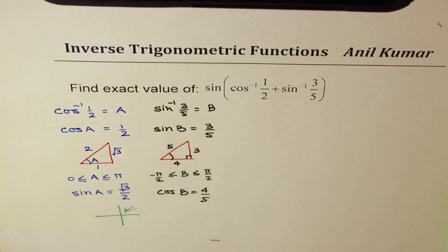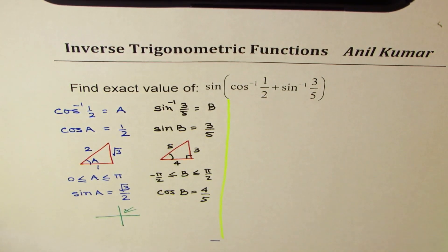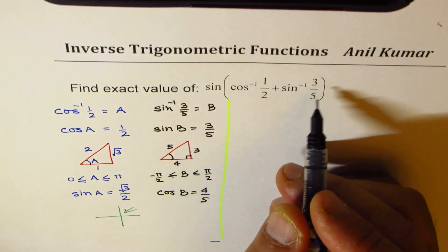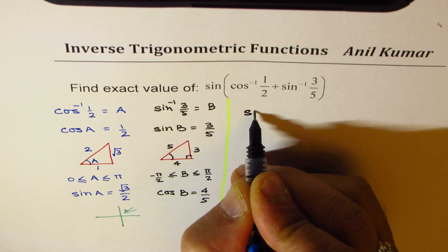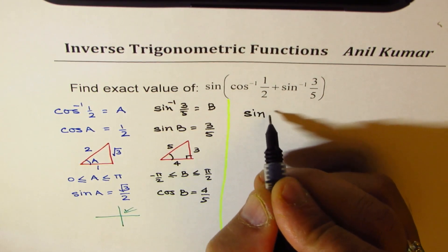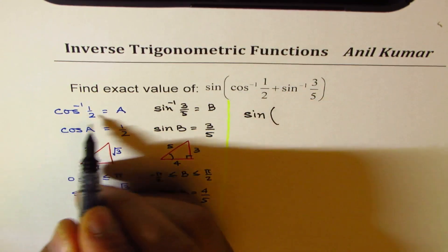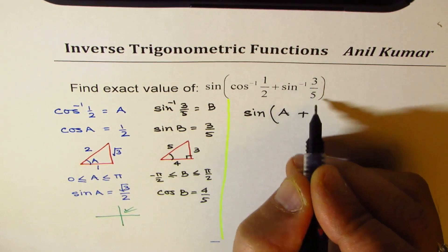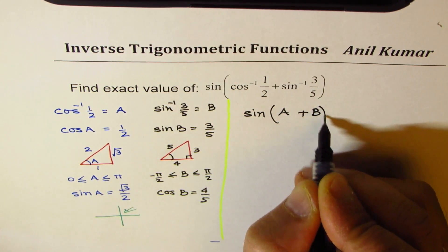Now the expression which is given to us is sine of cos inverse half plus sine inverse 3 by 5. I could write this as sine of cos inverse half is A, so we could write this as A plus sine inverse 3 by 5 is B. So it becomes sine of A plus B.